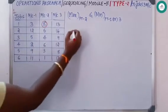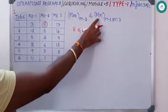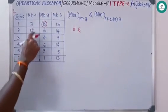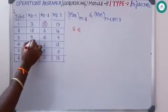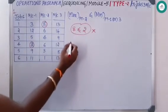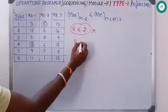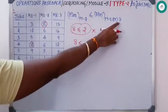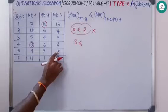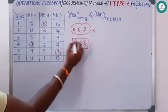This eight should be less than or equal to the minimum processing time on machine one or three. The minimum on machine one is two, so that condition fails. For the second condition, the maximum on machine two is eight, and the minimum on machine three is eight, so eight is less than or equal to eight — this condition satisfies, and we shall proceed.